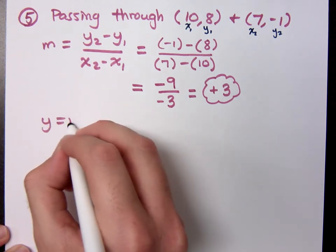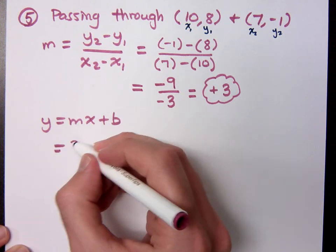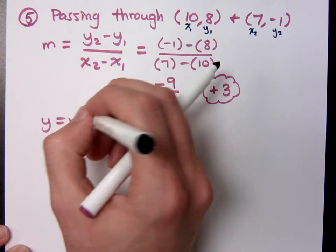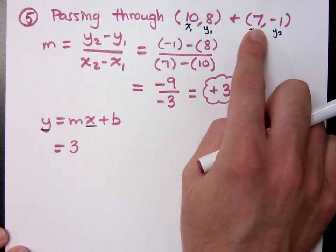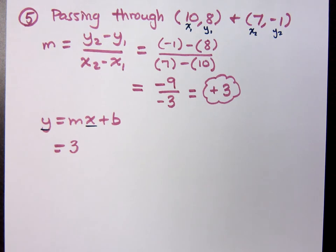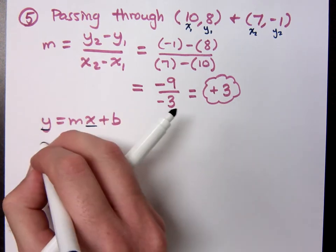So if I do y equals mx plus b, I know that my slope is going to be three, but what will I use for x and y? Which point do I use? It doesn't matter, because here's the thing. These points are on the same line, right? So it means the y-intercept, no matter which point I use, is still going to be the same. So I would probably use which one, do you think? Use the one with the positive numbers. That's what I would do. So my x value is 10. My y value is 8.